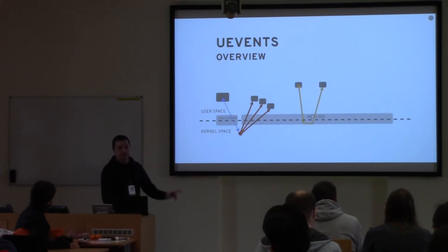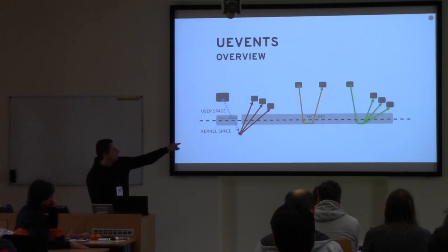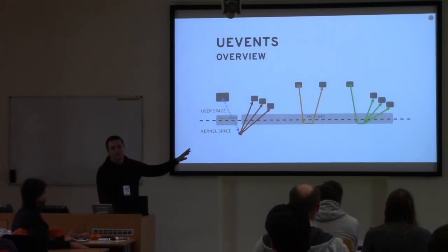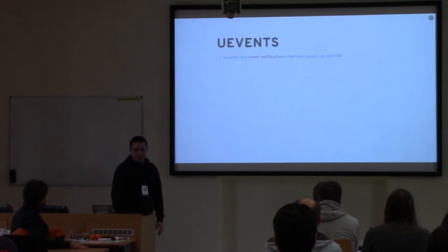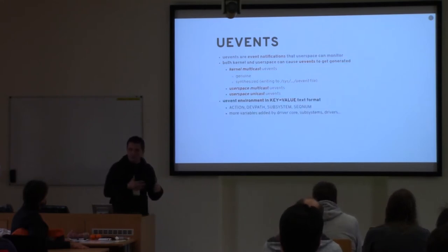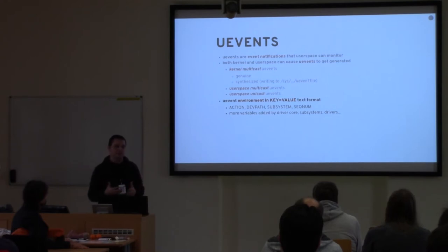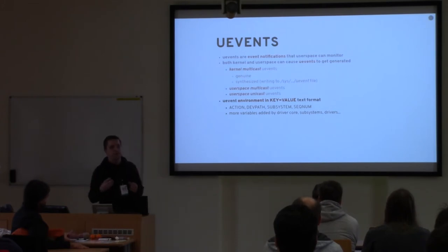It's also possible to send uevents between two processes in user space — both unicast and multicast. So as I said, uevents are event notifications. We have three basic types: kernel to user space, user space multicast, and unicast. Each uevent comes with some environment in the form of key-value pairs that tells you more about the context — what the uevent is about, what it is notifying you about, or any other information you need to process this notification in user space.